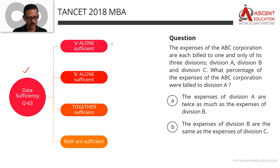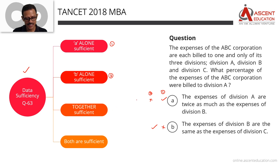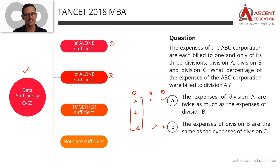Statement A alone is sufficient — go with answer option 1. B alone is sufficient — answer option is 2. If neither A alone nor B alone is sufficient but together they are sufficient, then answer option is 3. If both A alone and B alone are independently sufficient, the answer option is 4.